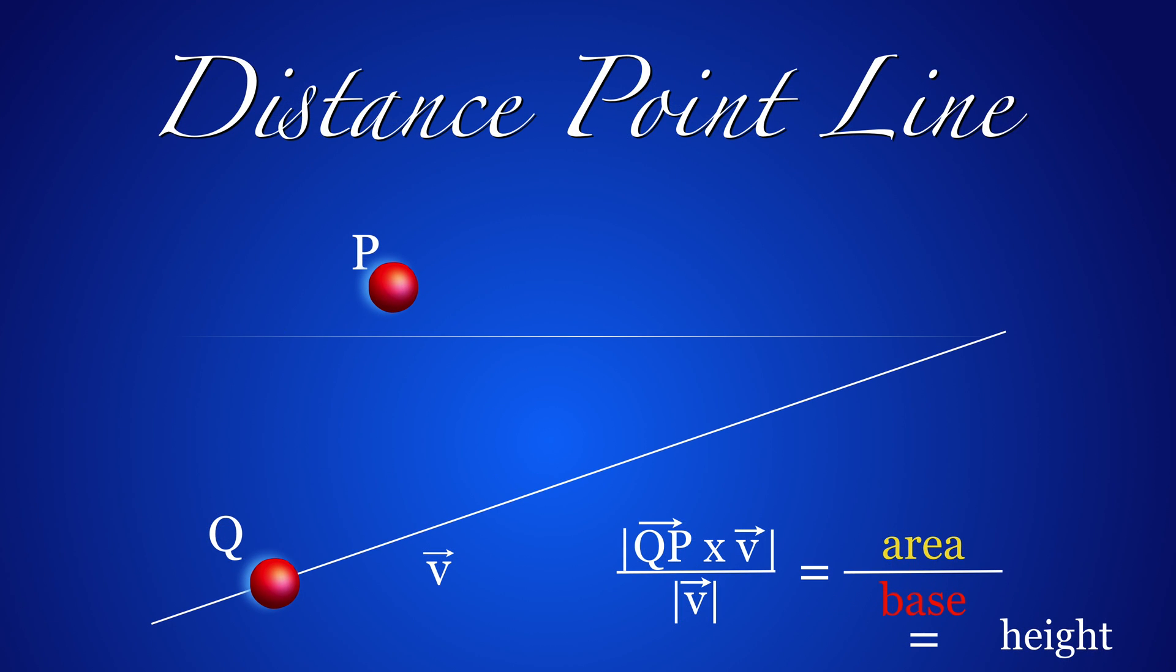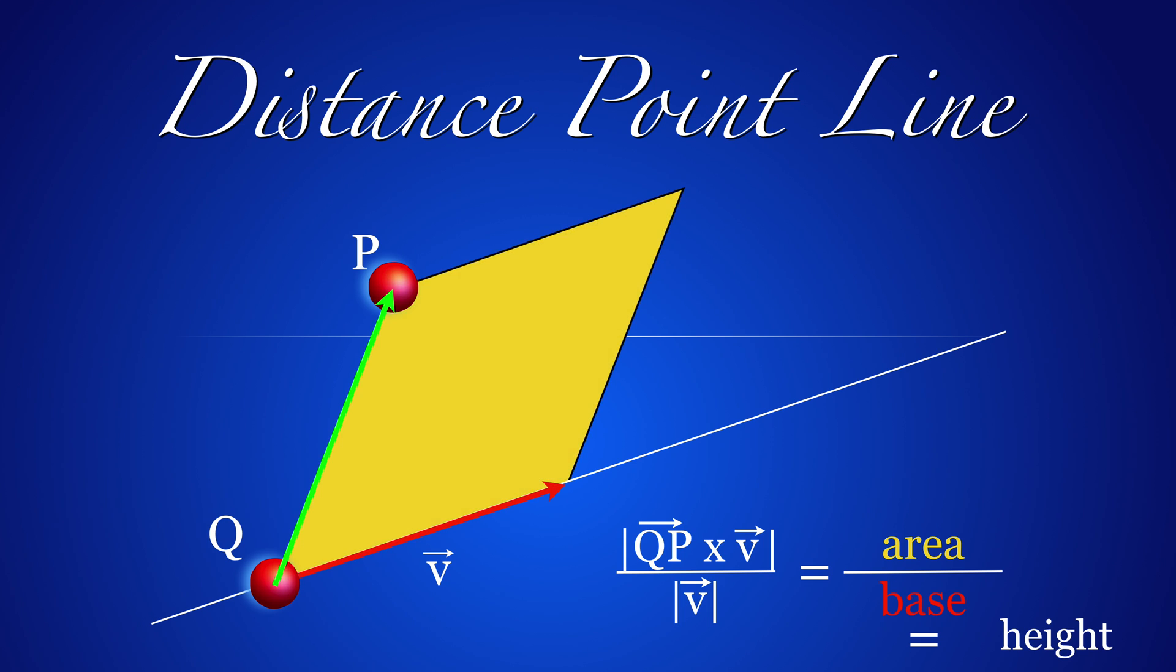Alternatively, we can see this also geometrically. Look at the parallelogram spanned by QP and V. Compute its area and divide by the base length. This gives the height, which is the distance of P to the line.